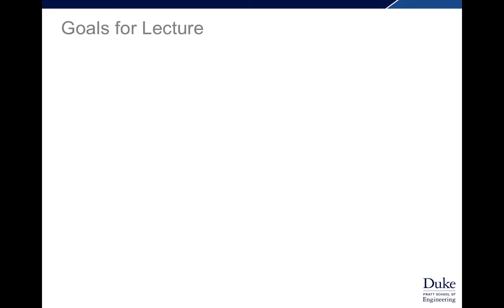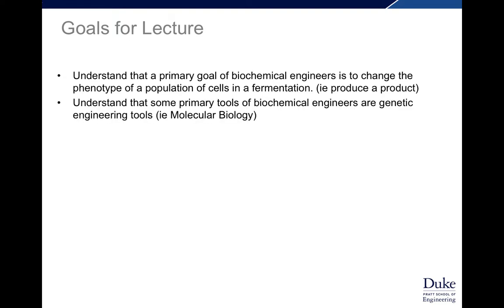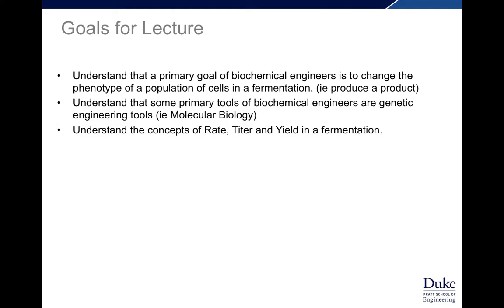The goals for this lecture are: first, to understand that the primary goal of biochemical engineers is to change the phenotype of a population of cells in a fermentation — i.e., produce a product. Second, to understand that some primary tools of biochemical engineers are genetic engineering tools and molecular biology. Third, to understand the important concepts of rate, titer, and yield, which are the key outputs and metrics of a fermentation.